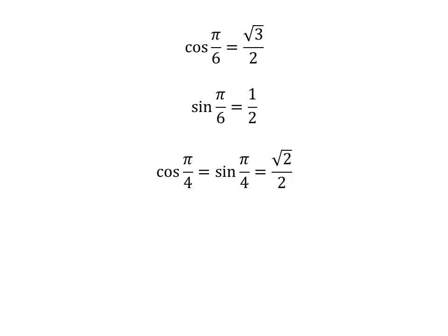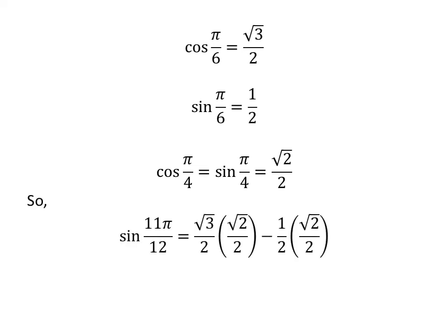As we know, cosine of pi upon 6 is equal to square root of 3 upon 2, sine of pi upon 6 is equal to half, and cosine of pi upon 4 is equal to sine of pi upon 4 is equal to square root of 2 upon 2. So we plug these values in the above equation. We get sine of 11 times pi upon 12 is equal to square root of 3 upon 2 times square root of 2 upon 2 minus half times square root of 2 upon 2.